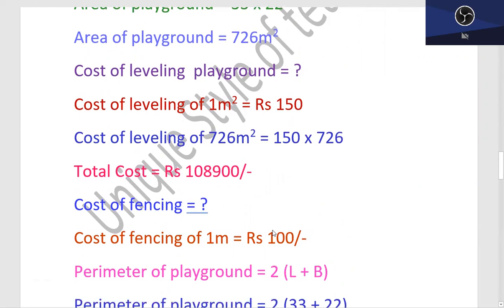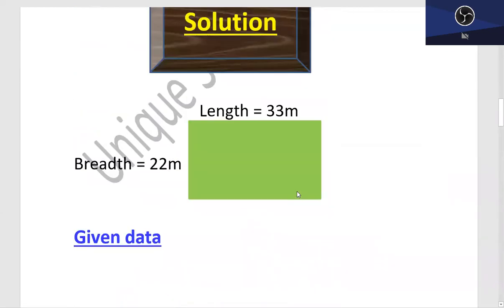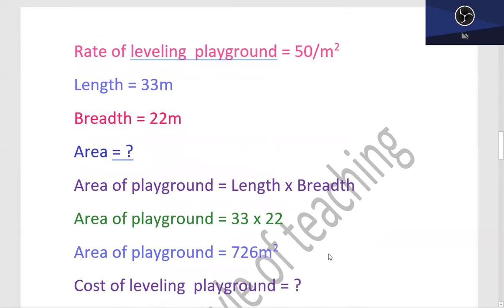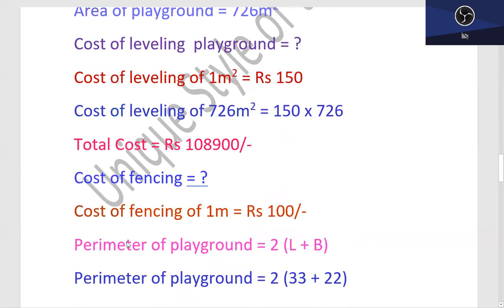Moreover, you will find the cost of fencing. Fencing basically is the border, that means we have the shape perimeter. Perimeter mil jayega to hum usko multiply kar lenge given rate ke saath to humein total expenditure to be incurred on the fencing mil jayega. Cost of fencing of 1 meter is equal to 100 rupees.